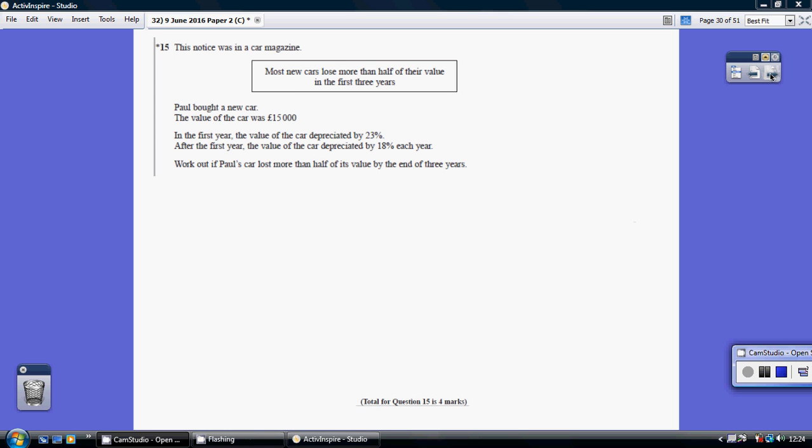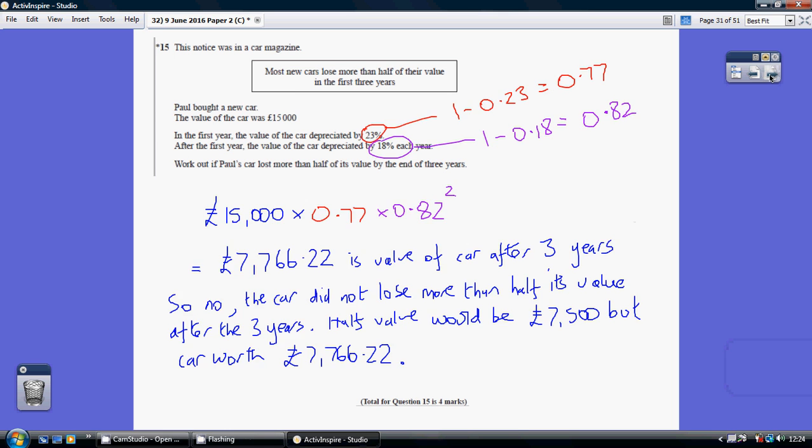Question 15. I'm going for the quick way to do this. Step one: take your initial value of £15,000 and multiply it by the multiplier for year one. If it depreciates by 23%, which is 0.23, the value it holds is 1 - 0.23 = 0.77.